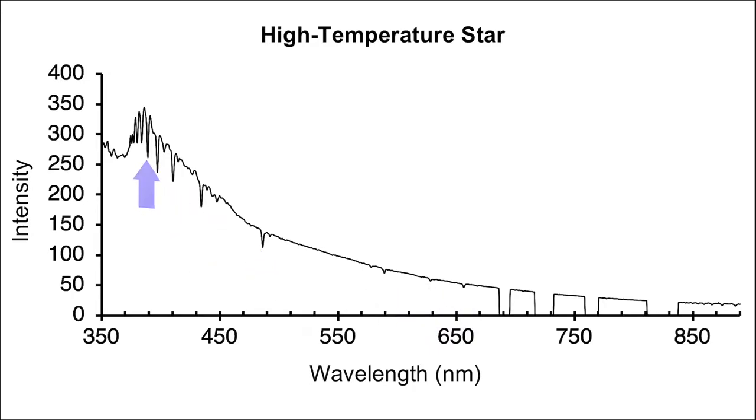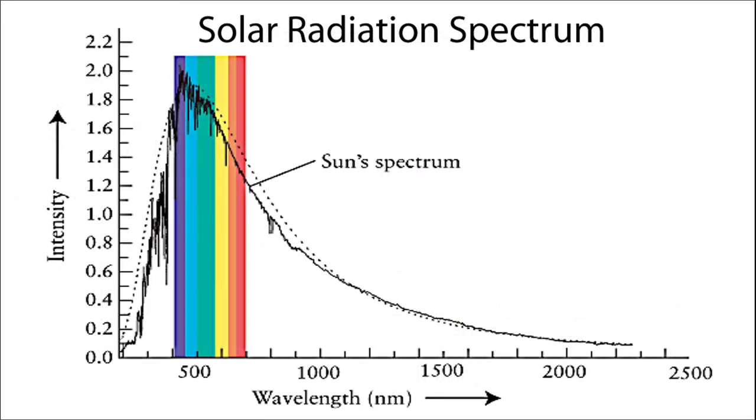Now we're looking at the absorption spectrum of the sun. For comparison, we have also provided a dotted curve representing the black body curve of an ideal 5800 Kelvin black body. In this absorption spectrum, we can still see those dips we mentioned before.